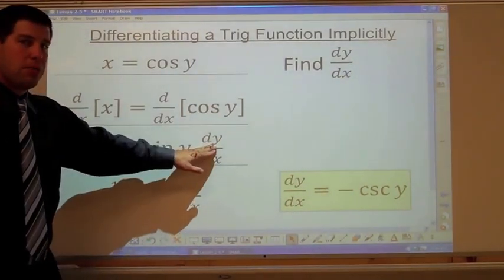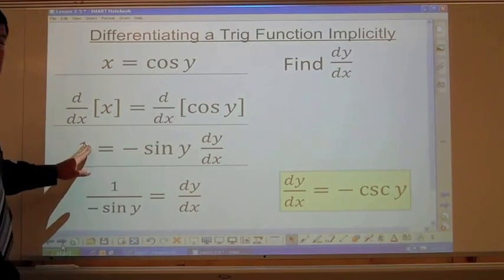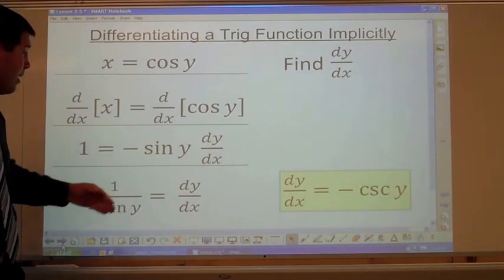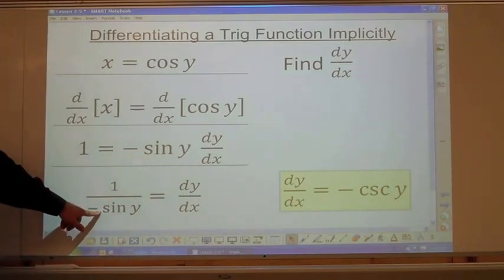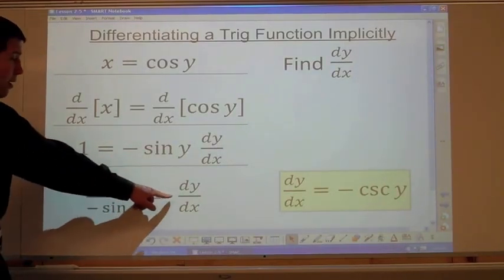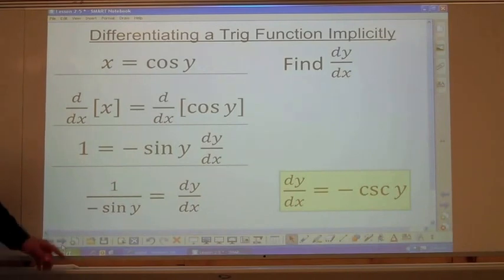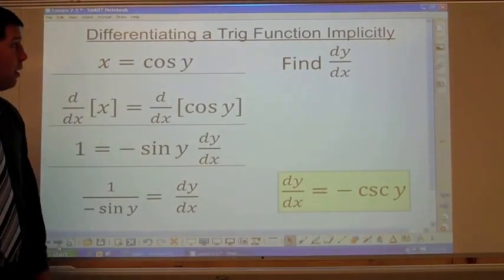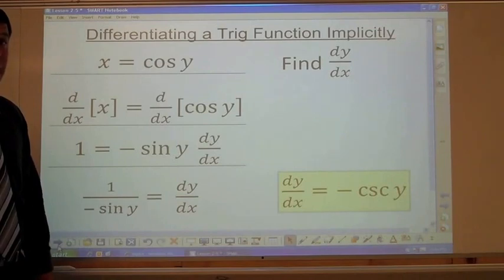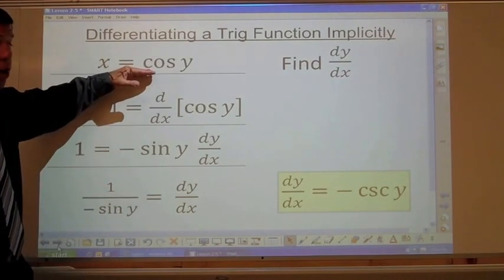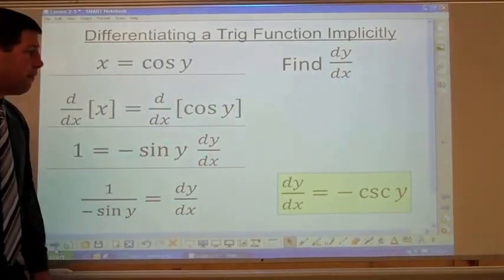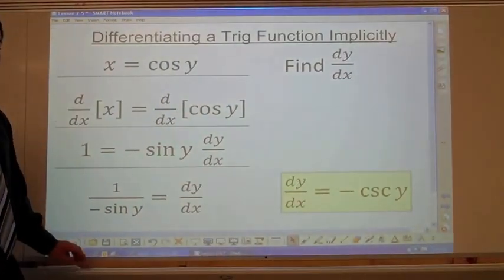We have all our dy/dx terms on one side and all other terms on the other side. Divide both sides by negative sine of y: you get dy/dx equals 1 over negative sine of y, which is just negative cosecant of y.